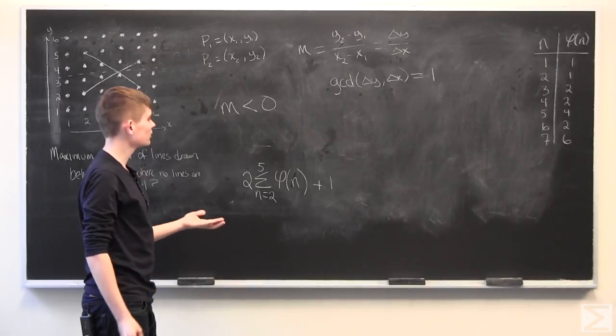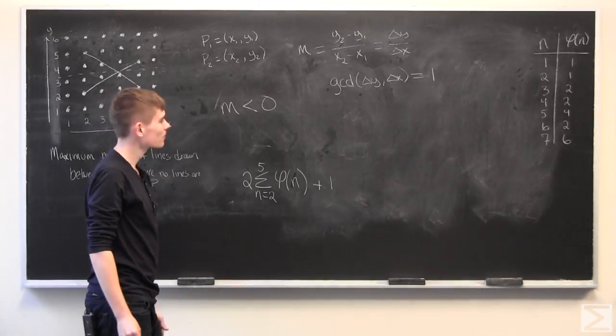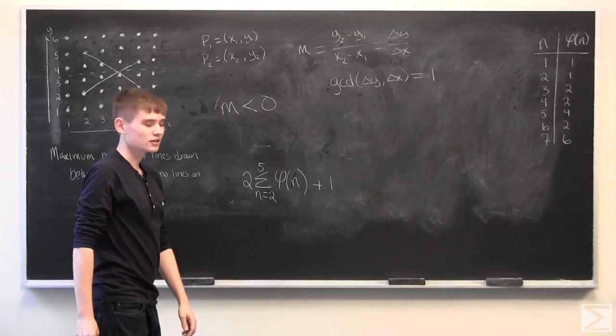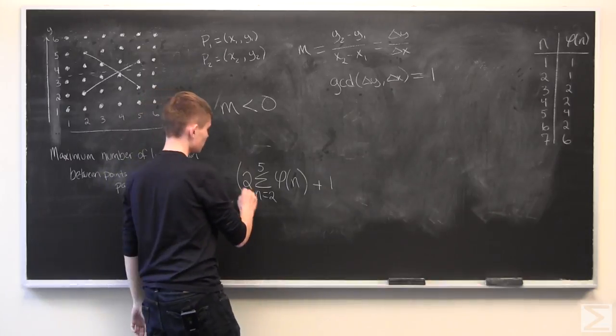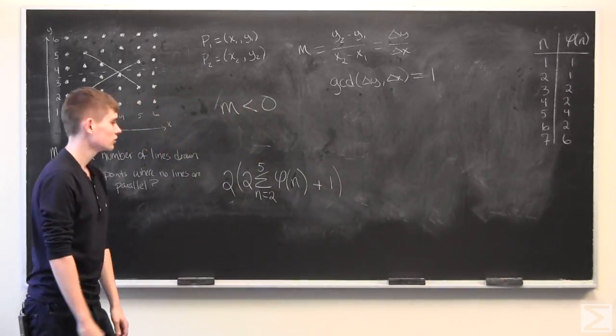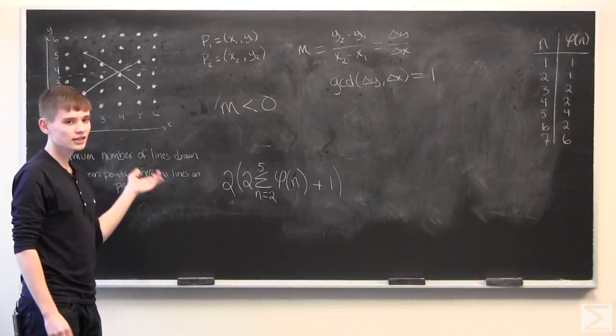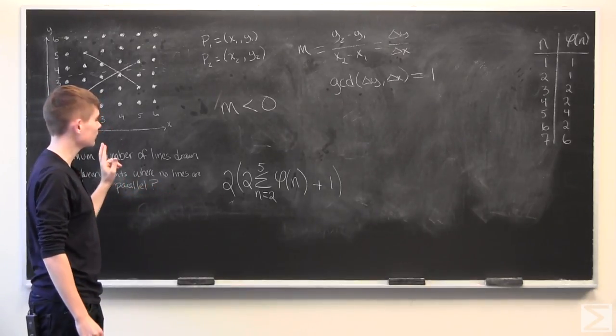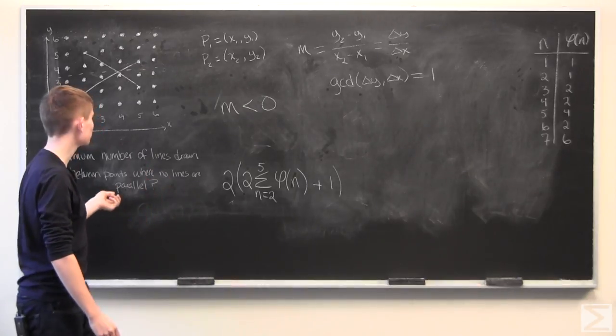Hopefully, you'll see that there is, again, the same number of positive slopes as negative slopes. And we can multiply this whole thing by 2 to get the total number of positive and negative slopes. And there's just one last thing we have to do.